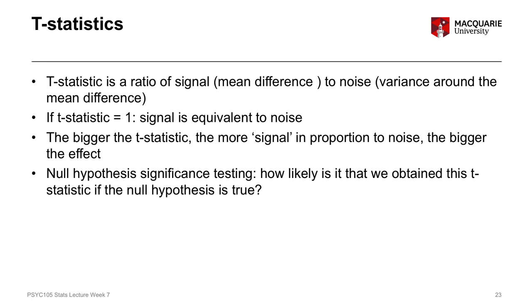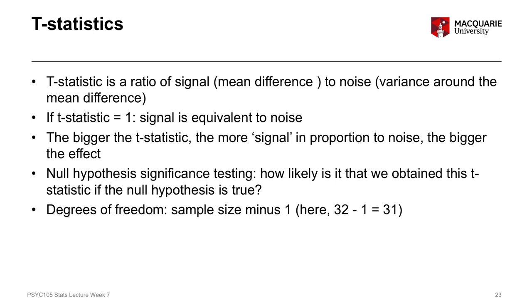Remember that the process of null hypothesis significance testing — which is what we're doing when we get a p-value that corresponds with our test statistic — is to see how likely it is, what the probability is, that we've obtained this particular t-statistic if the null hypothesis of no difference between the two conditions is true. The smaller our p-value, the less likely it is that we obtained this t-statistic under the null hypothesis, and therefore the more likely we're picking up on a real effect. The degrees of freedom for the paired samples t-test is the sample size minus one, so here 32 minus one gives us 31 degrees of freedom.